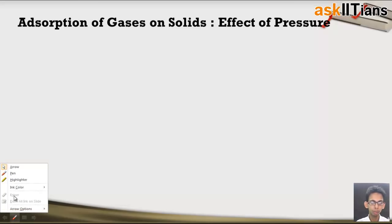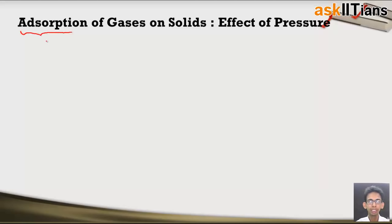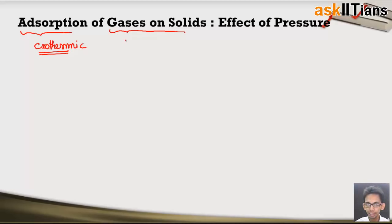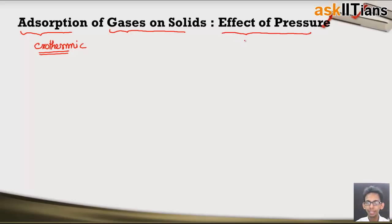Before starting the discussion about pressure, let's have a look at the effect of temperature on adsorption. We know that adsorption is an exothermic process, which means whenever we increase the temperature, adsorption decreases. The adsorption of gases on solids highly depends on temperature. So if we want to discuss the effect of pressure, we always need to take it at constant temperature.